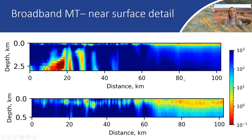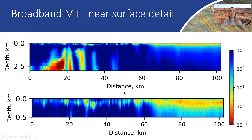Taking a closer look at the broadband MT transect, the top slice shows the top two and a half kilometers and the bottom shows the top 0.5 kilometers. Red is conductive, blue is resistive. You can see we're mapping out the conductive sediments of the Murray Basin area — that's a good sign for the area. We also have depth modelling that has been done by George Guthers at the survey.